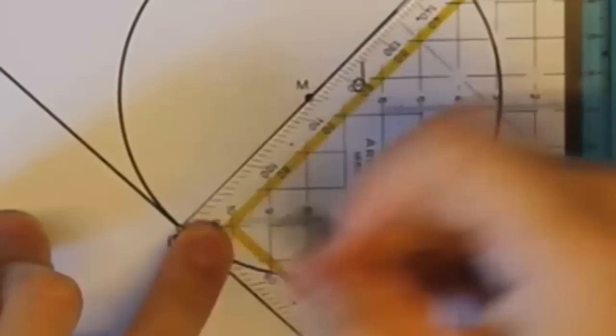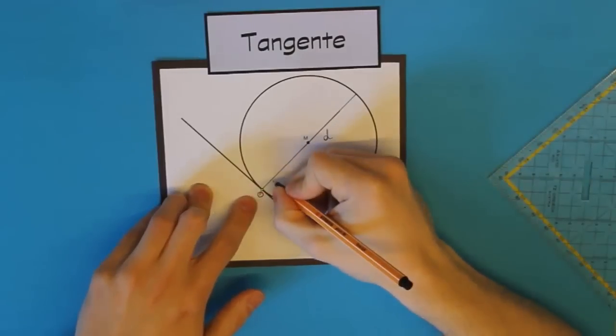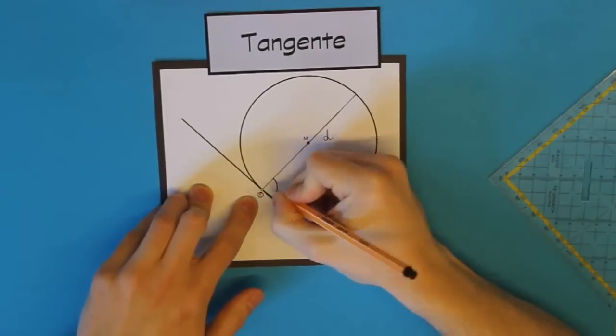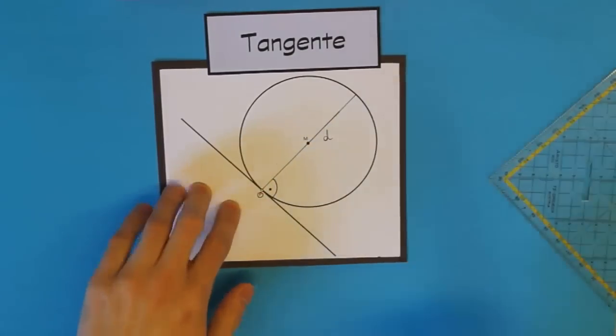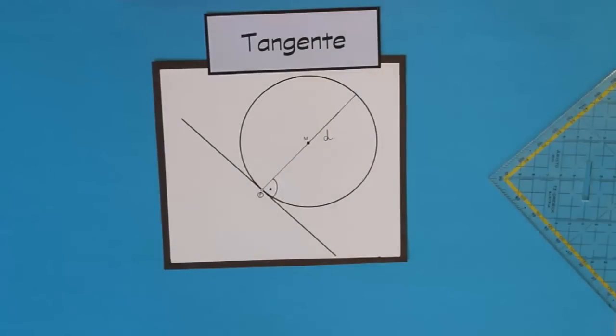Seht ihr das? Der Durchmesser und die Tangente schließen einen rechten Winkel ein. Diesen zeichnen wir einfach noch ein. Also ganz wichtig, eine Tangente schließt mit dem Durchmesser des Kreises im Berührpunkt immer einen rechten Winkel ein. Also der Durchmesser und die Tangente stehen normal aufeinander.